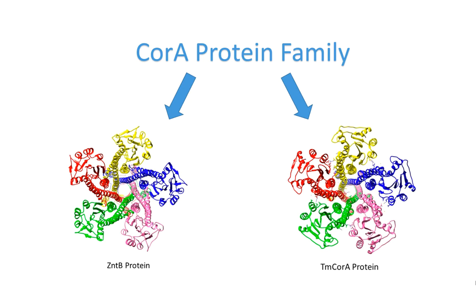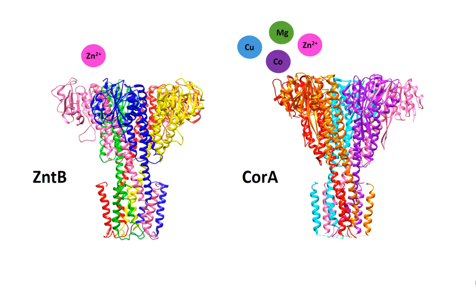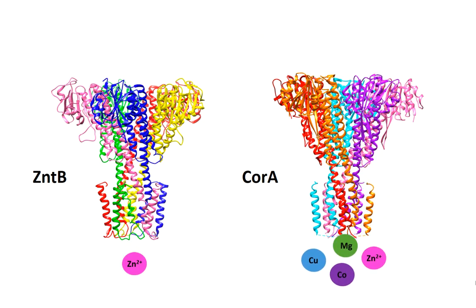Additionally, ZntB and CorA are sequence homologues. These striking similarities are why scientists believe the two proteins also had similar functionality. However, as mentioned before, ZntB only transports divalent zinc, whereas CorA can transport magnesium, cobalt, zinc, and copper.